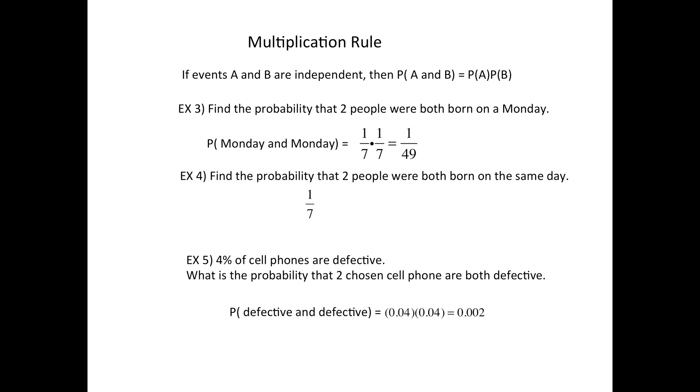So defective and defective means that we multiply the 0.04, in other words 4%, times 0.04, which turns out to be 0.002 or 0.2%.